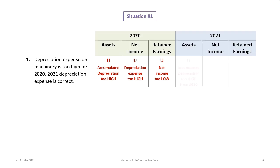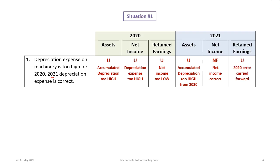Carrying into 2021, assets are still understated because the accumulated depreciation from 2020 is too high. Net income in 2021 is correct because the depreciation expense is correct — no effect on 2021 net income. However, retained earnings are still understated because the 2020 error carried forward.